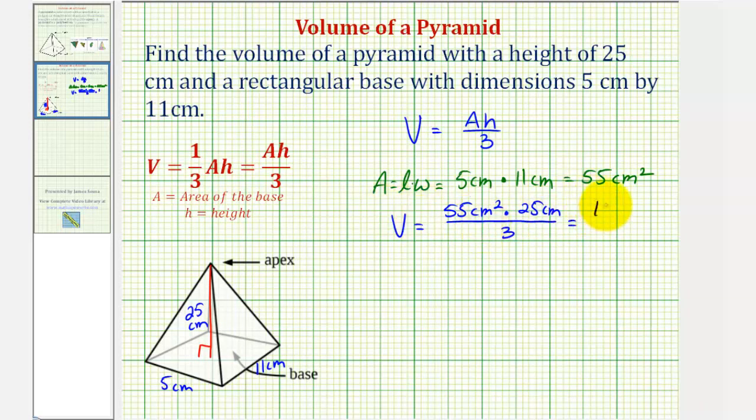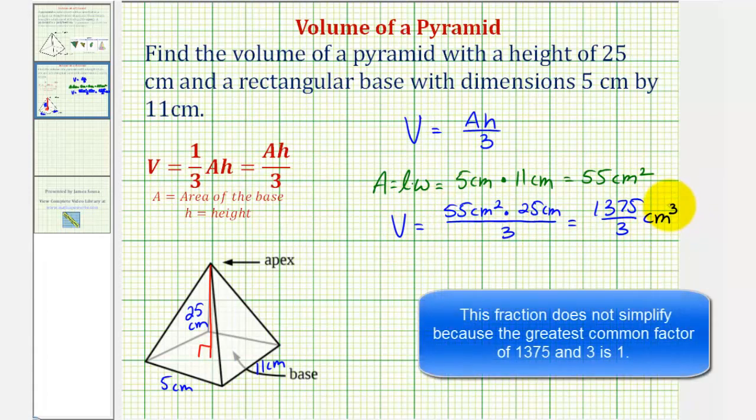So the volume would be 1375 divided by 3 cubic centimeters. Notice how by leaving the units in our formula, we can see why the units must be cubic units. So this would be our exact volume, but let's go ahead and represent this in a couple different ways.